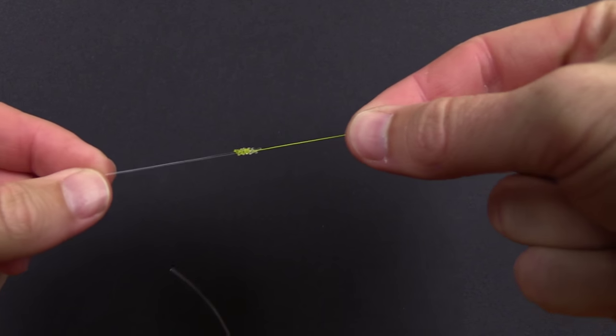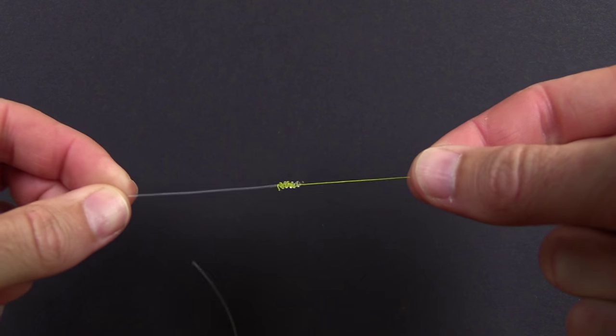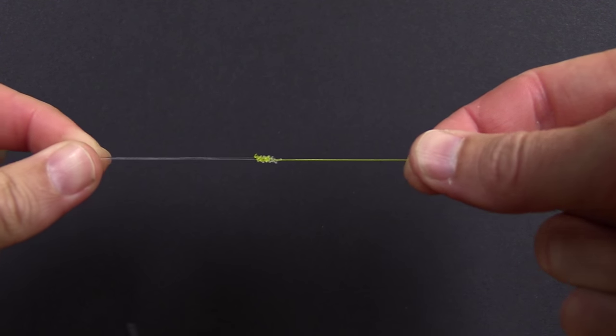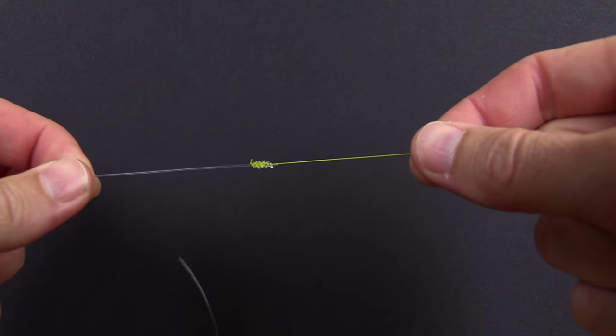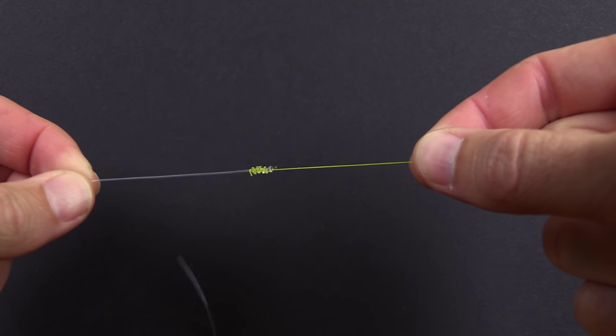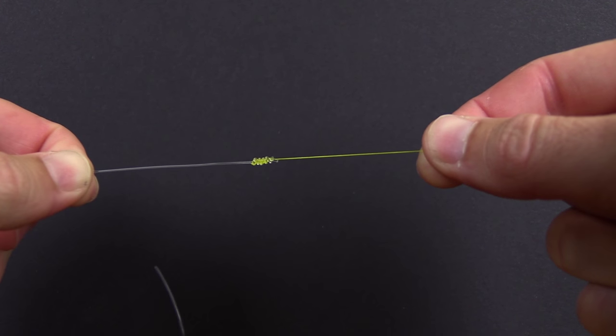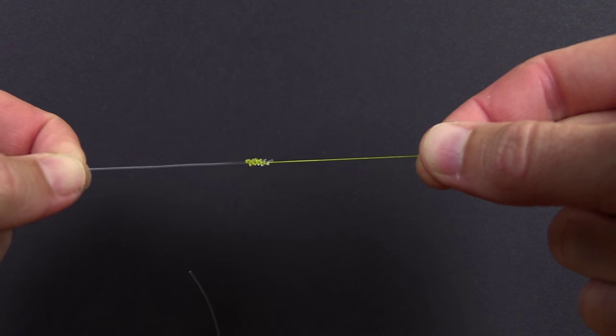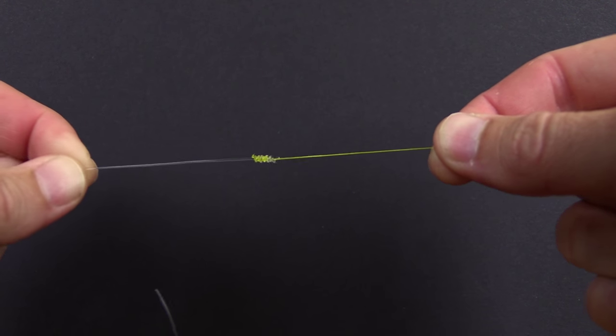There is our surgeon's knot for braid to leader, and that's the six-turn surgeon's knot. For braid, I recommend six to eight turns. For mono, you don't need quite as many. Three to four tested really high on our analysis.